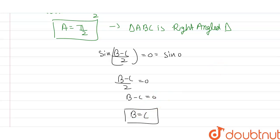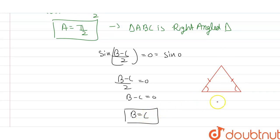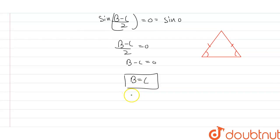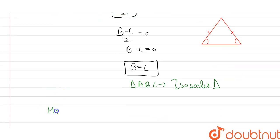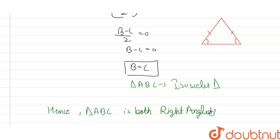When two angles of a triangle are equal (B = C), the triangle is isosceles, because the two sides opposite to equal angles are also equal. Hence, triangle ABC is either a right-angled triangle or an isosceles triangle. This completes the proof.